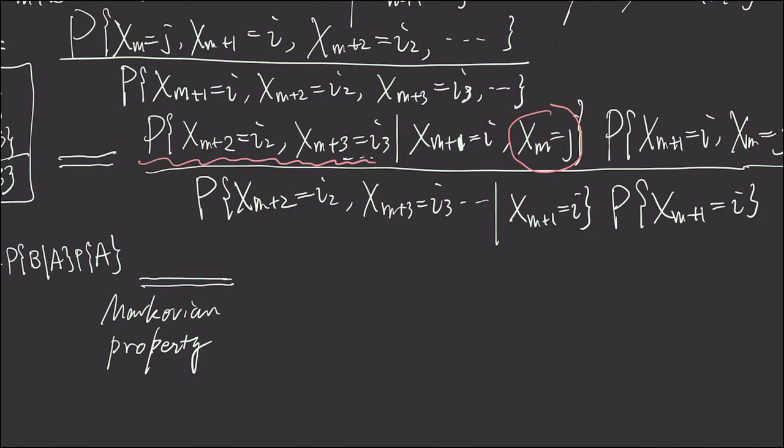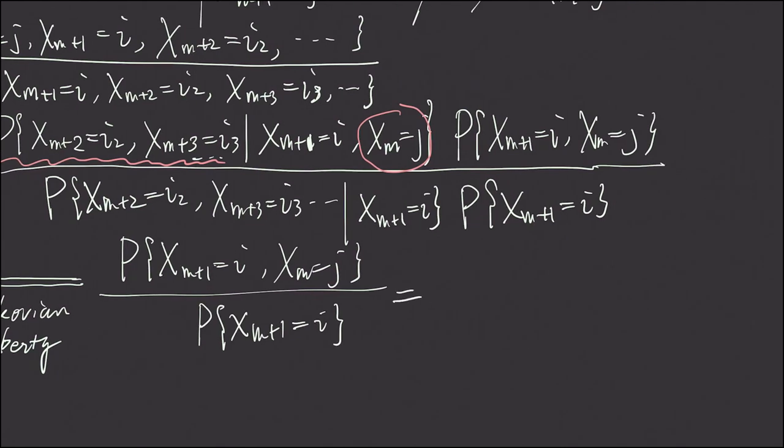So this conditional probability right here is equal to this conditional probability right here, which means they can cancel and we end up with this simple formula, which in turn, we use conditional probability definition again.